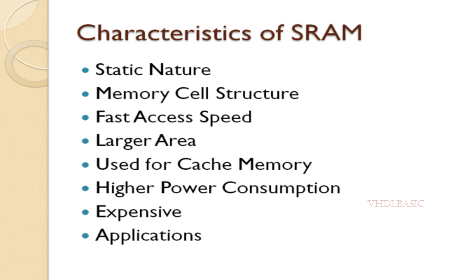Fast access speed: SRAM offers fast read and write access times compared to other types of memory like DRAM, making it suitable for applications that require quick data retrieval. Larger area: each SRAM cell is more complex than a DRAM cell, often requiring six transistors. As a result, SRAM is less dense and more power hungry compared to DRAM, but its performance advantages often justify its use in specific applications.